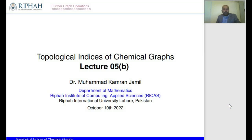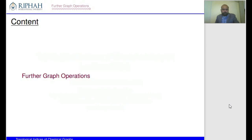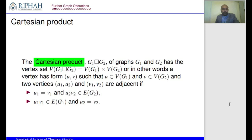Bismillahirrahmanirrahim. Today is our fifth B lecture. In our previous lecture, we discussed some graph operations — unary and binary — and their degree behavior and some topological indices. We continue and discuss some further graph operations and try to investigate their topological indices. There is only one content: graph operations and their topological indices.